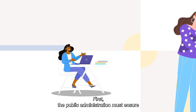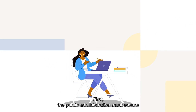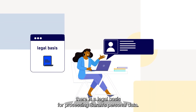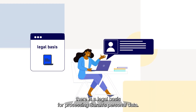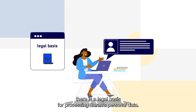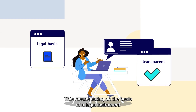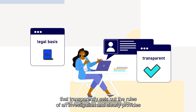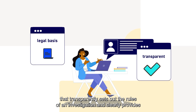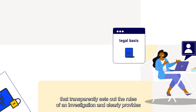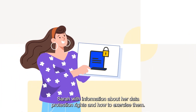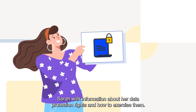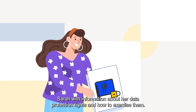First, the public administration must ensure there is a legal basis for processing Sarah's personal data. This means acting on the basis of a legal instrument that transparently sets out the rules of an investigation and clearly provides Sarah with information about her data protection rights and how to exercise them.